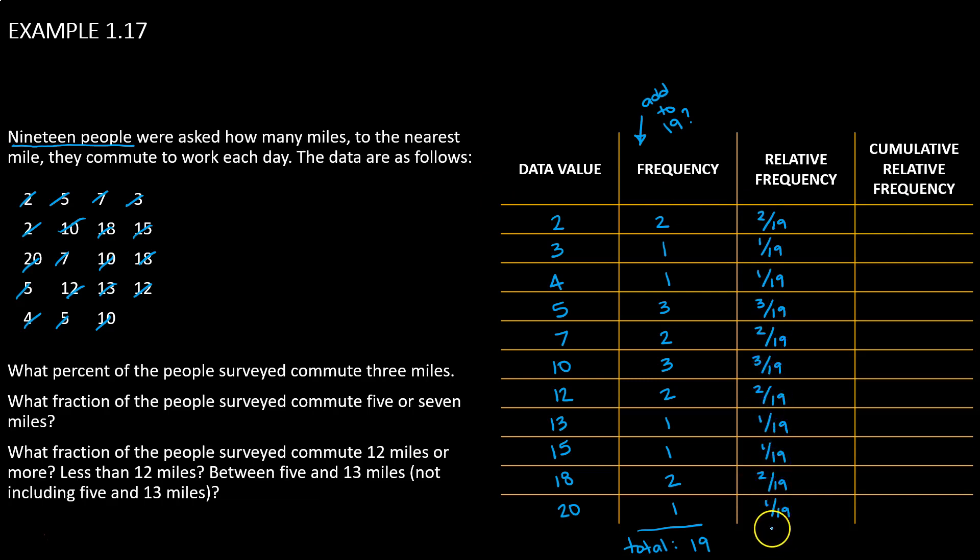And again, we should check that the total in our relative frequency adds to 1. Quickly adding all of those fractions, we're able to find that we get 19 over 19, which is the same thing as 1.